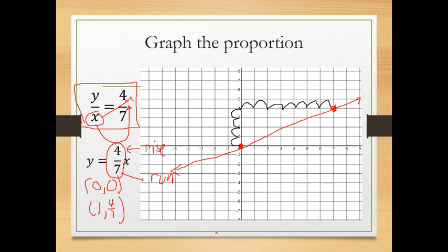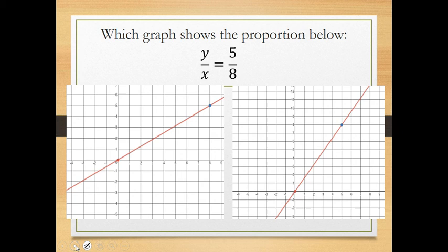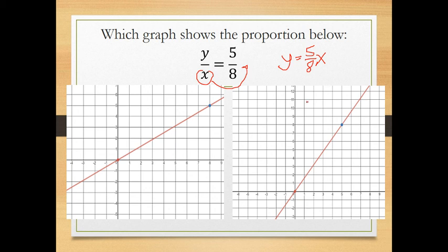In the problems you're given, a common question is: which graph shows the proportion? Here's our proportion. One approach is to isolate y — that's a one-step thing. Then we know (0, 0) should be on this graph, and we can use the slope to get another point and see which option is correct.